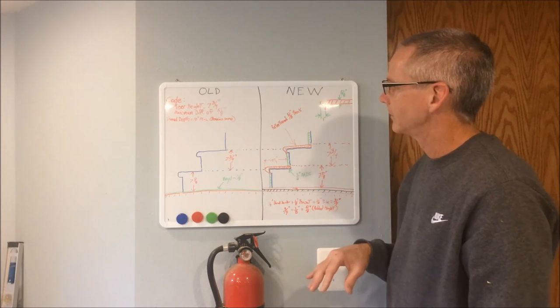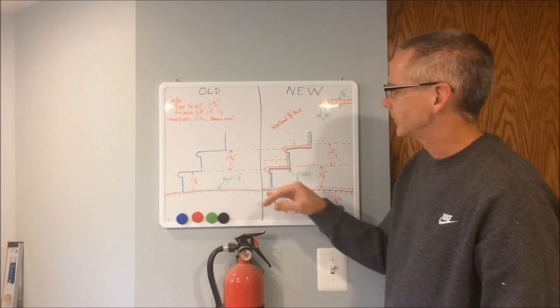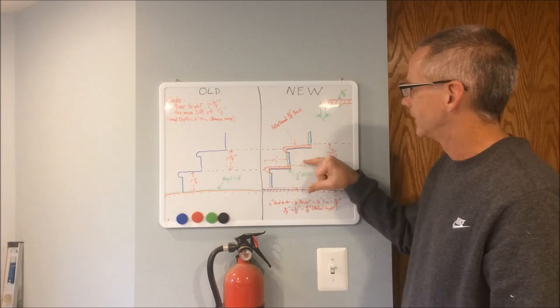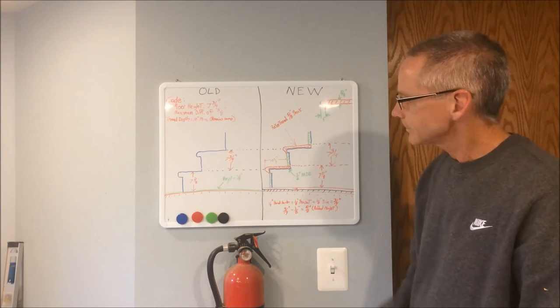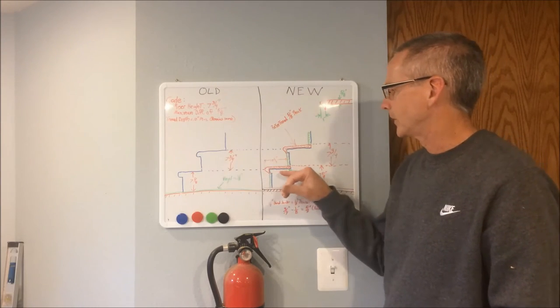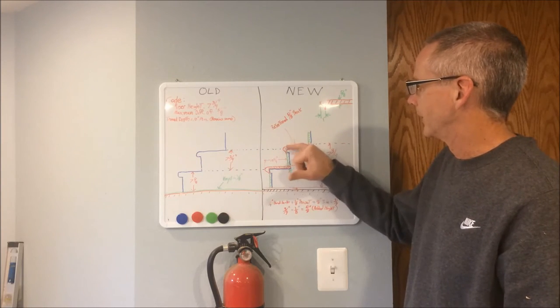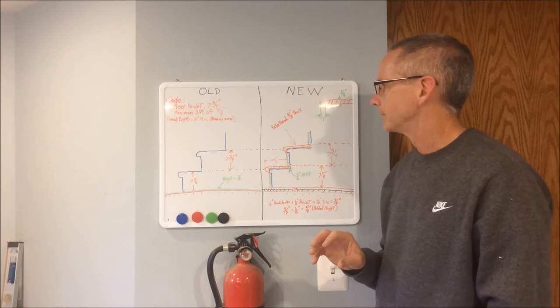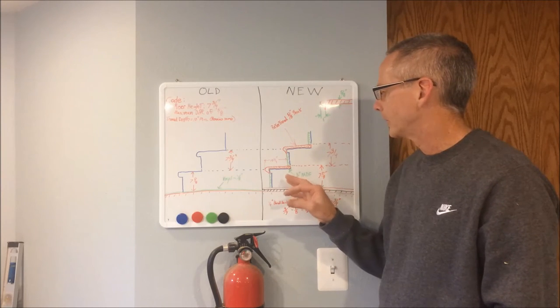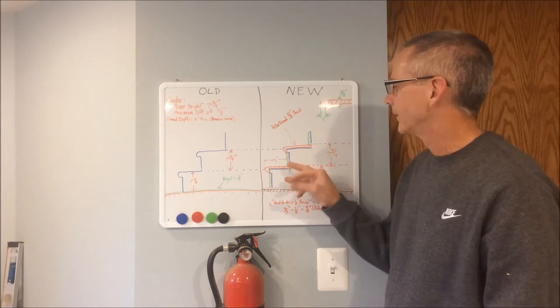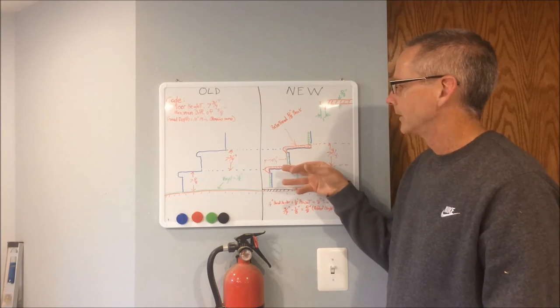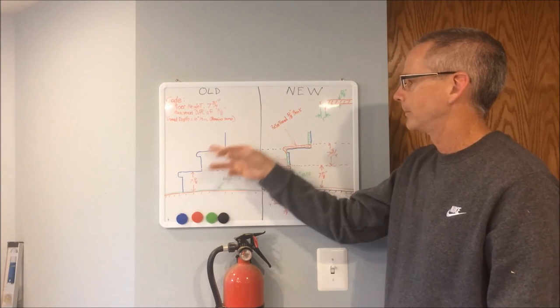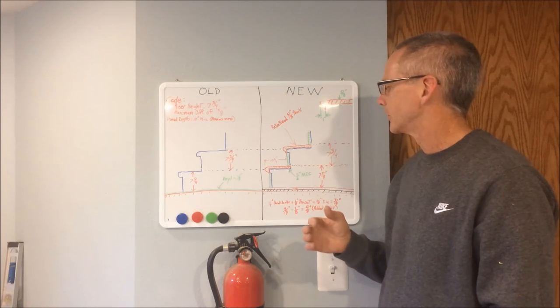One of the issues I was concerned about was the riser height. The code specifies that your riser height, from your step to the next step, is supposed to be 7 3/4 of an inch. Along with that, there's another requirement that the maximum difference between any step can't be more than 5/8 of an inch.